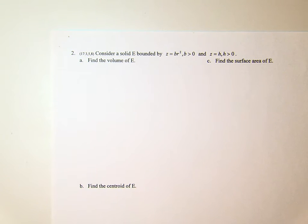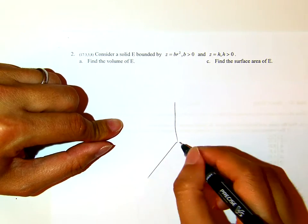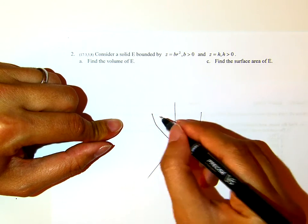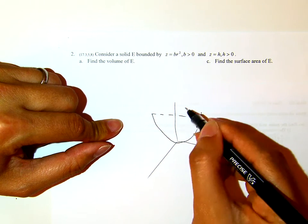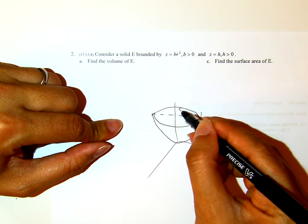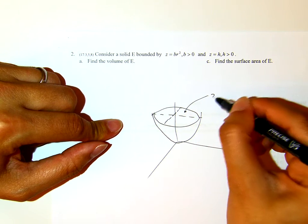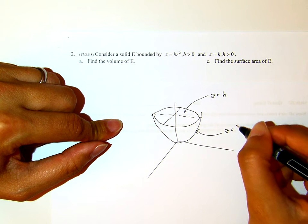And the second equation, it is a plane parallel to XY plane. If I try to draw it, the top here is z equals H, and the paraboloid is z equals Br squared.